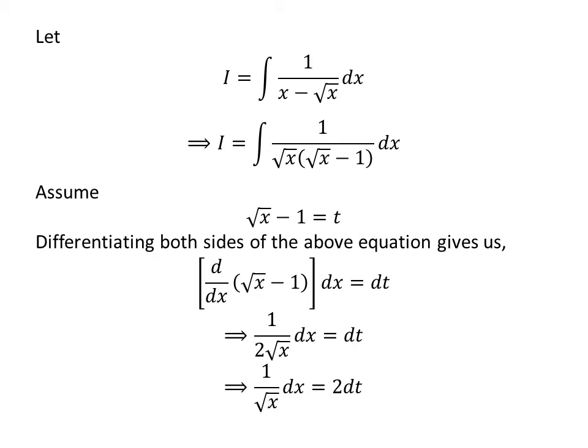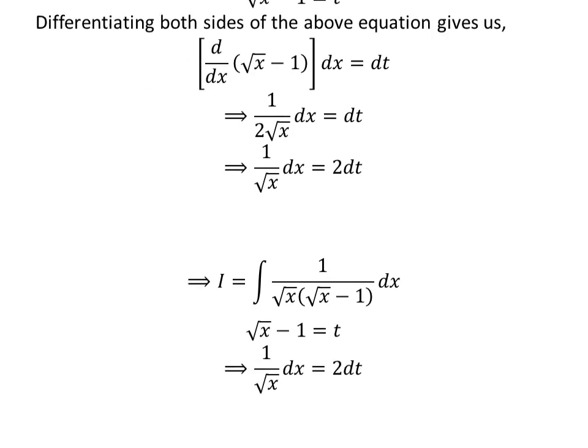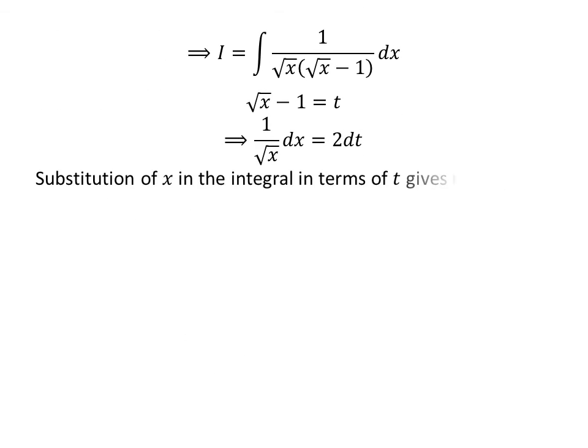Shifting the half to the right-hand side gives us 1 upon square root of x times dx equals 2 times dt. In the integral i, let us substitute square root of x minus 1 by our assumed value t, and 1 upon square root of x times dx by 2 times dt. So i is equal to the integral of 2 upon t with respect to t.